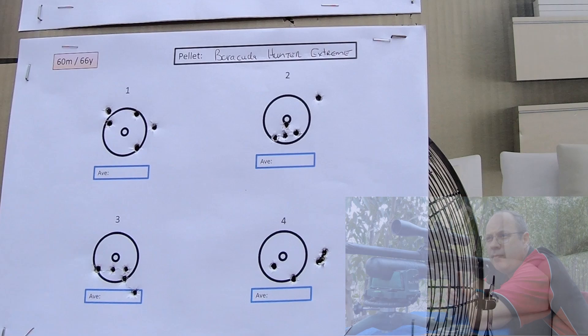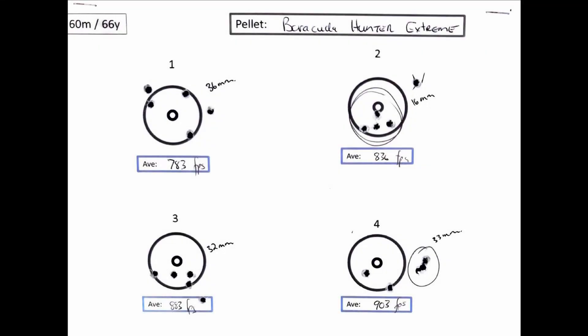Hopefully, I was expecting the worst after the 30 meter groupings I saw, but this is actually not too bad. Will this be my preferred hunting pellet? I don't think so, but up to 30 meters it can be quite devastating.